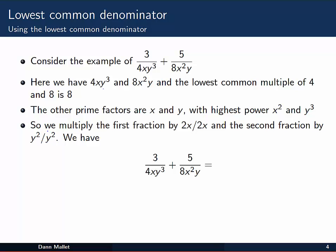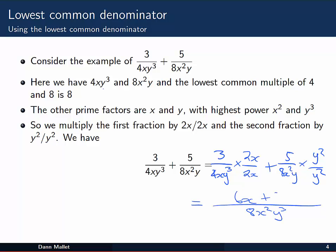So to form the lowest common denominator, we multiply the first fraction by 2x on 2x, and the second fraction by y squared on y squared. This will give us a common denominator of 8 over x squared y cubed. So let's look at that in the addition. We're going to have 3 over 4xy cubed multiplied by 2x on 2x, plus 5 on 8x squared y, times y squared on y squared. Now we've got our common denominator of 8x squared y cubed, and on the top we have 6x plus 5y squared.